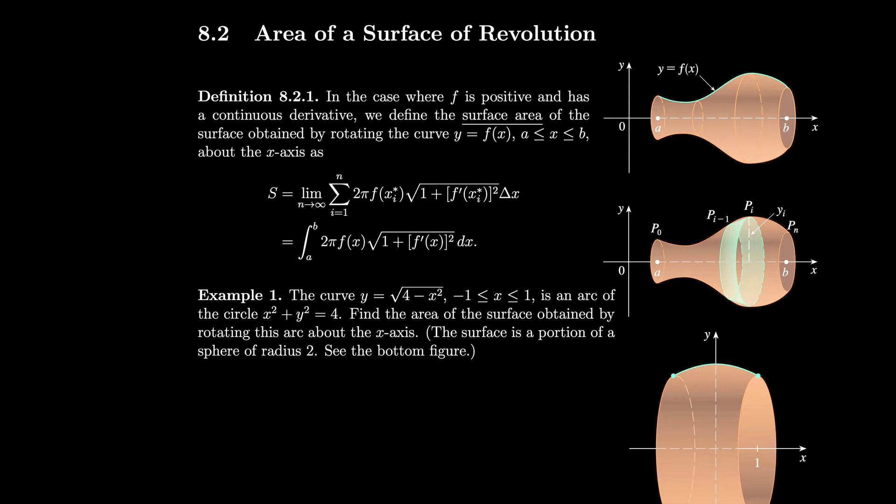In the case where f is positive and has a continuous derivative, we define the surface area of the surface obtained by rotating the curve y equals f of x, where x is between a and b, about the x-axis as the limit of the Riemann sum 2π f(xᵢ*) times the square root of 1 plus the derivative of f squared, delta x — which is the integral of 2π f(x) times the square root of 1 plus the derivative squared.